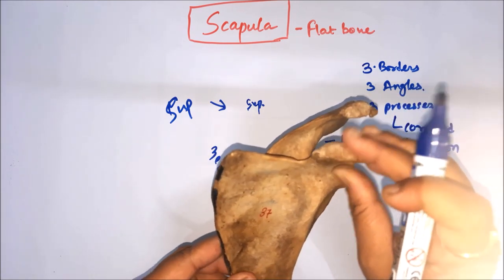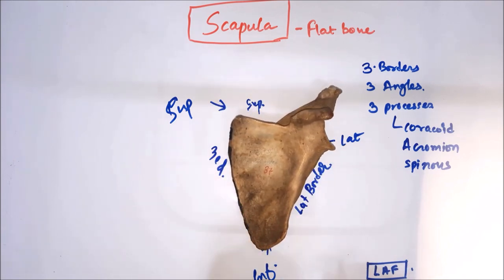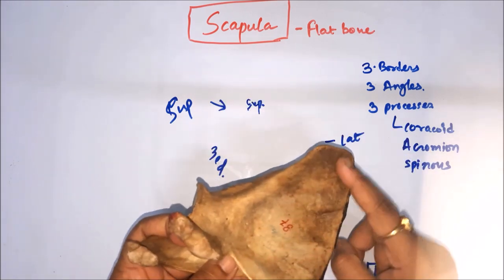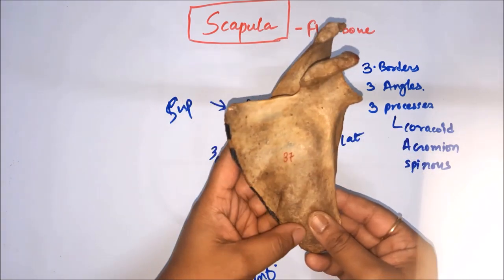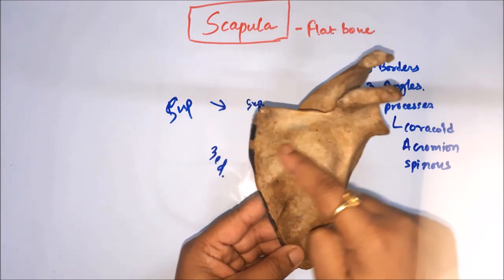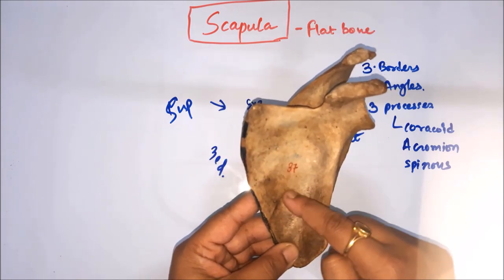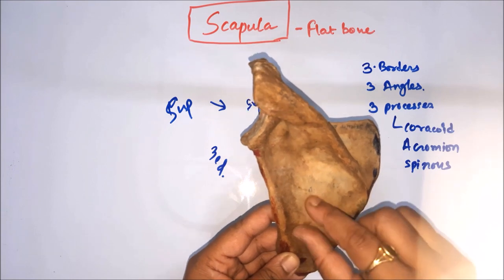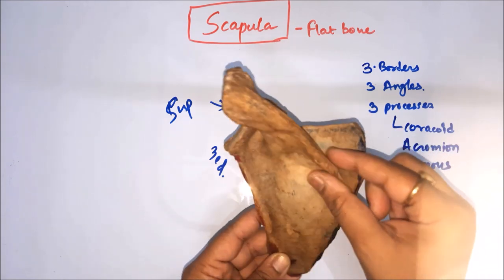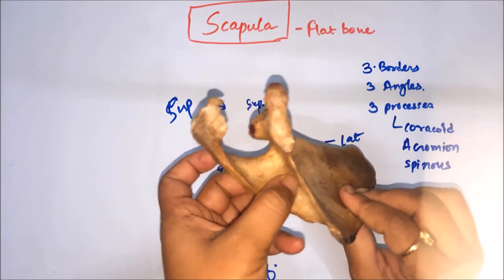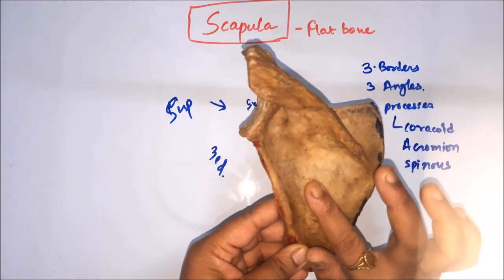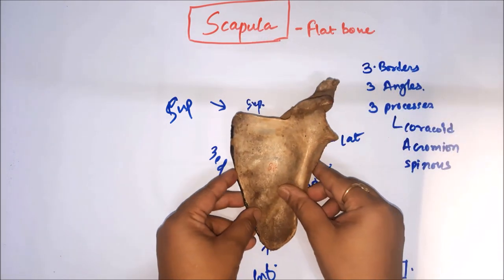It has two surfaces. The anterior surface is concave and smooth — you can see it has ridges on the anterior surface. The posterior surface is convex, and in the upper part the posterior surface gives attachment to the spinous process. Where the spinous process attaches, that surface is known as the posterior surface.